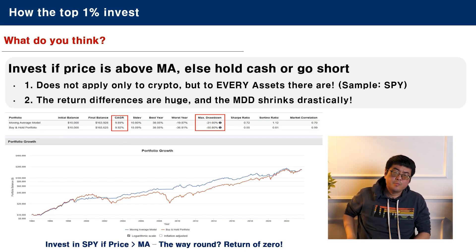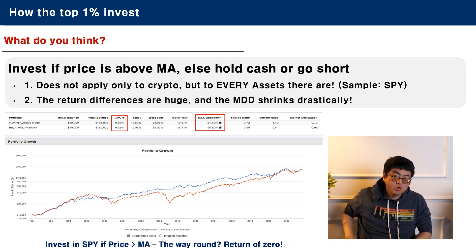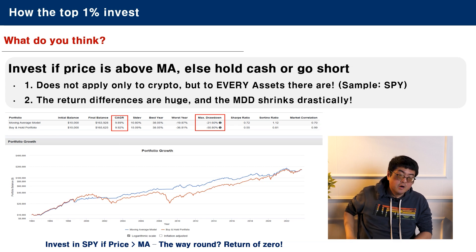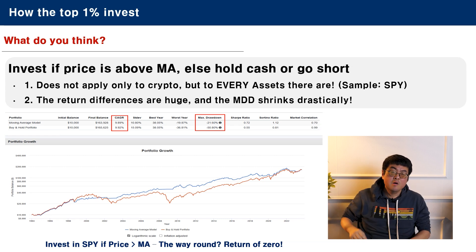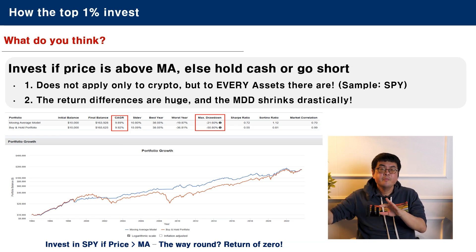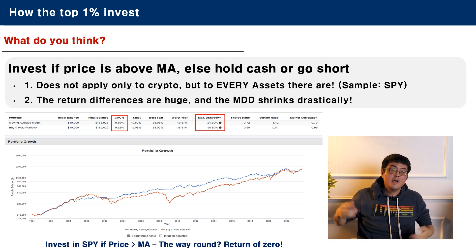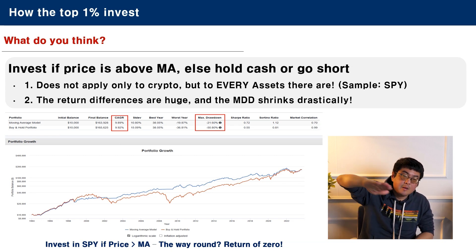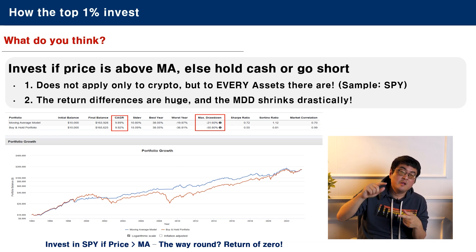So investing when the price is above the moving average is a pretty good idea. And if the price is below the moving average, you either hold cash or go short. Of course, it does not only work with cryptocurrencies — it works with stocks as well. Here I took a chart from Portfolio Visualizer. The red line shows what would have happened if you had bought and held the S&P 500 index. The blue line shows what would have happened if you switched between S&P 500 and cash depending on whether the S&P 500 was above the 200-day moving average. The return was basically the same. However, the maximum drawdown went down from 50% to 21.6%. You have basically the same return, but your losses would have been much smaller. So even in the S&P 500, it's smart to invest only when the index is above the moving average.